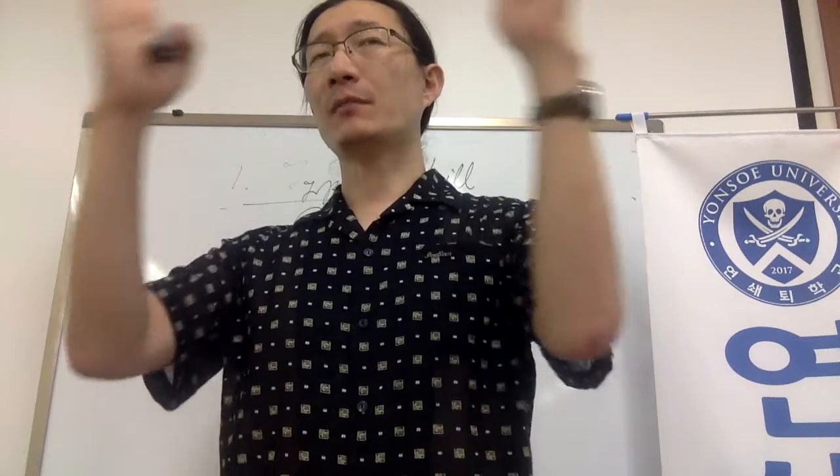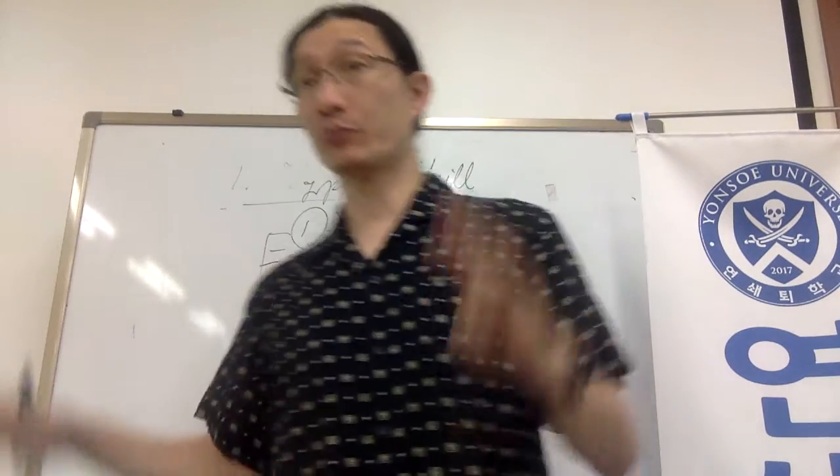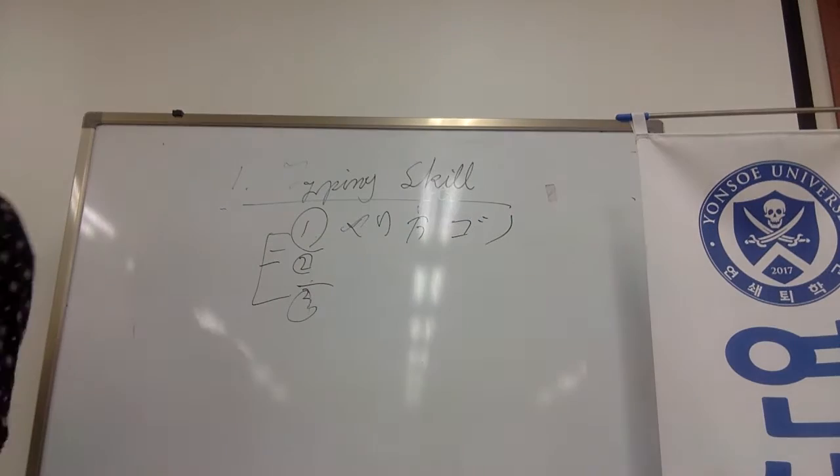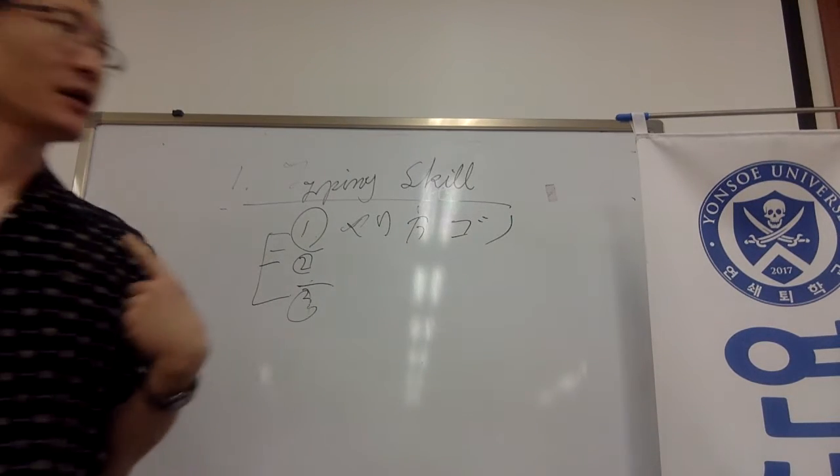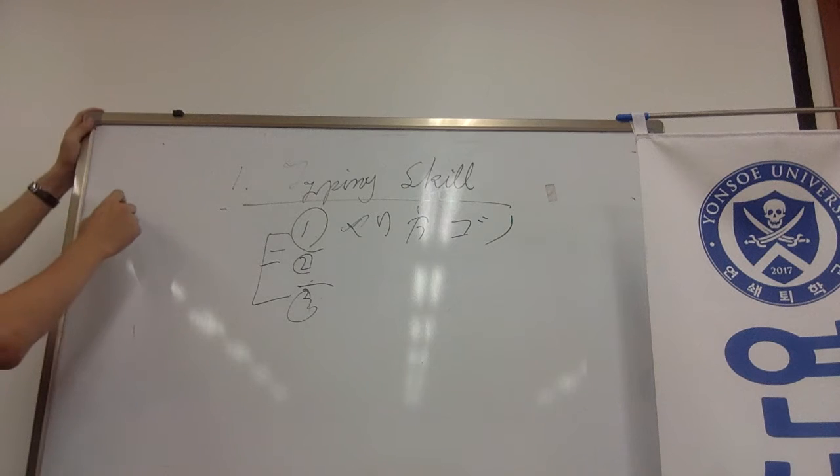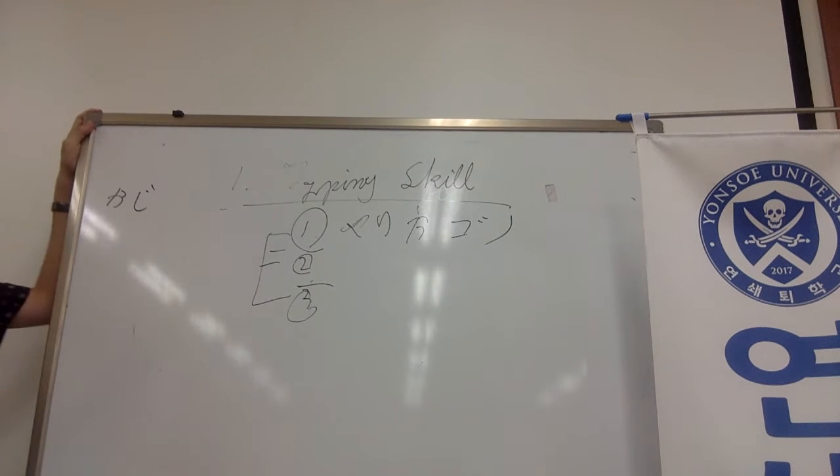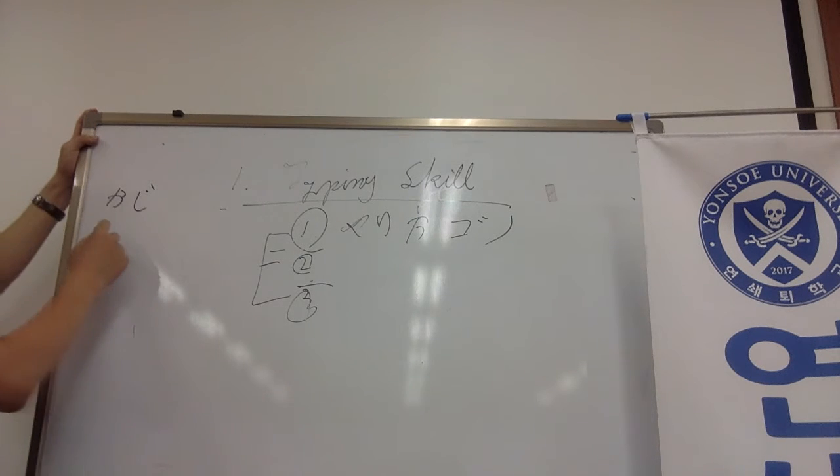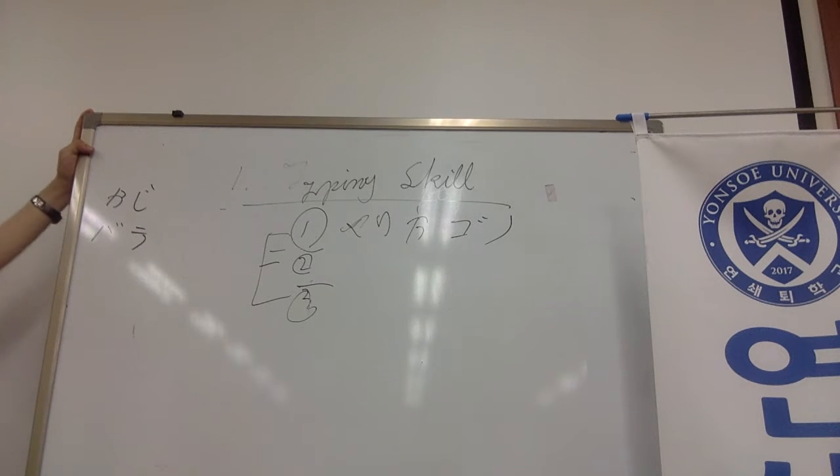For example, in the main game, zombies appear wearing the word 'bara' (rose). This kanji is so difficult that even the teacher can't write it. Most Japanese people write it in katakana.